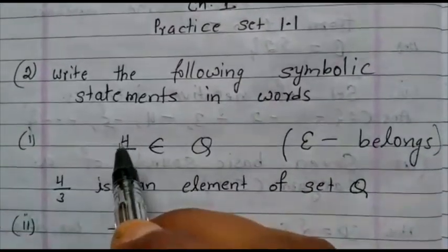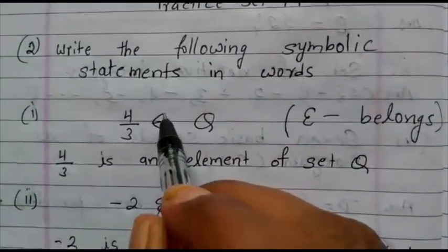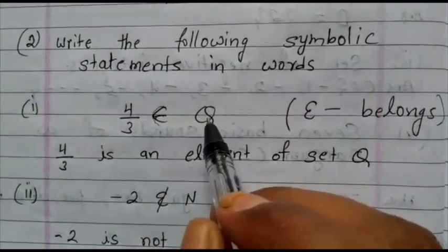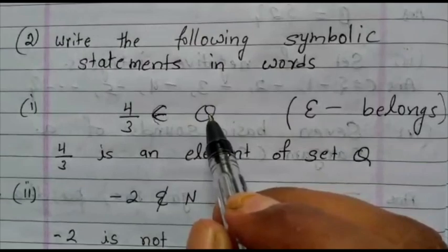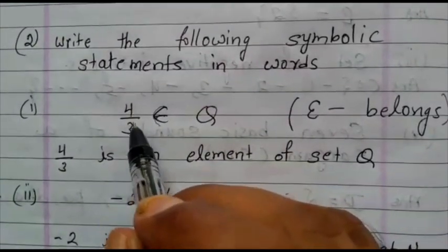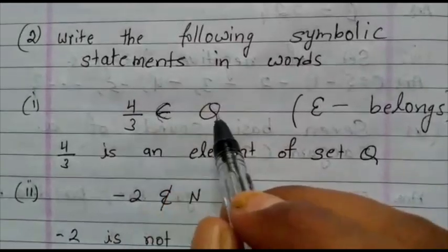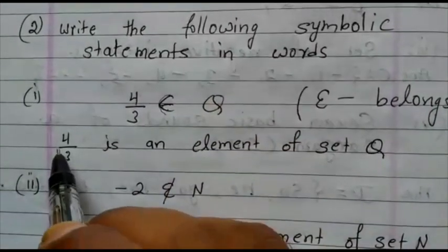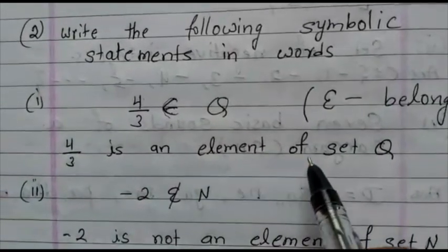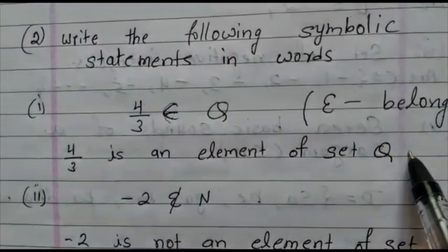What is the question here? 4 upon 3, this sign is known as belongs. Here Q is given. Q means rational number. So how do we read this? 4 upon 3 belongs to the rational number. How to write the answer? 4 upon 3 is an element of set Q.